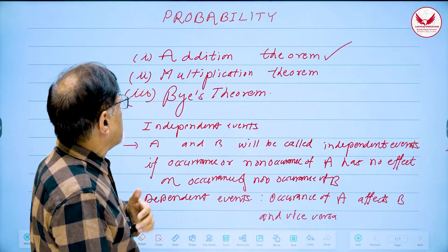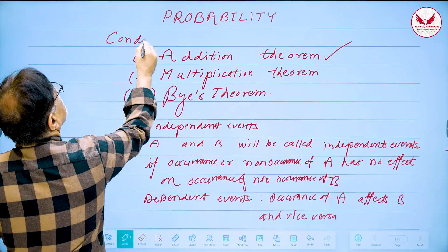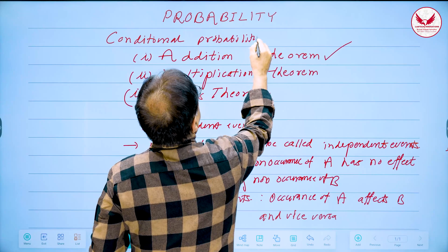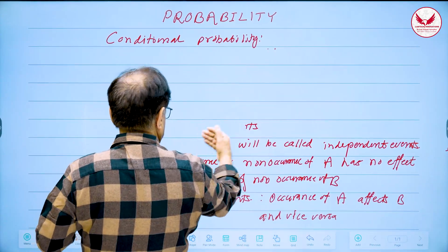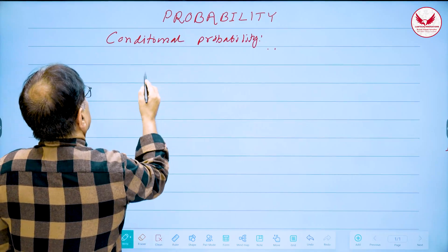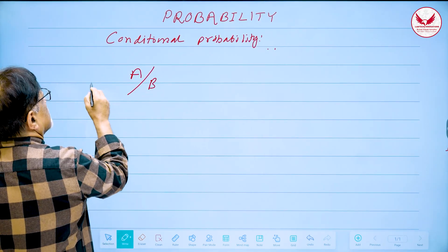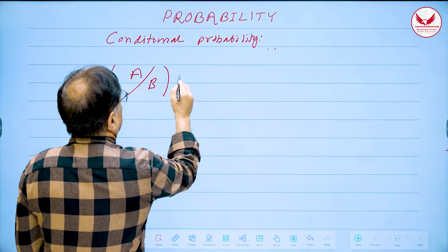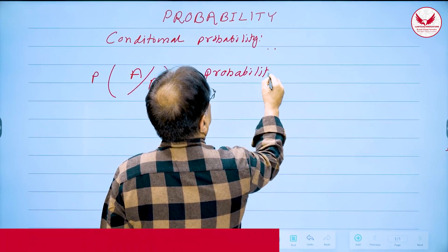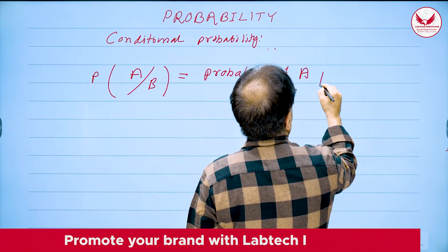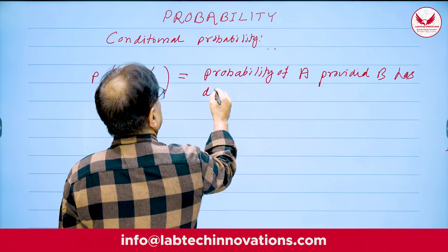The multiplication theorem is related to conditional probability. The notation for conditional probability is P(A|B) — probability of A given B. Probability of A given B means the probability of A, given that B has already happened.